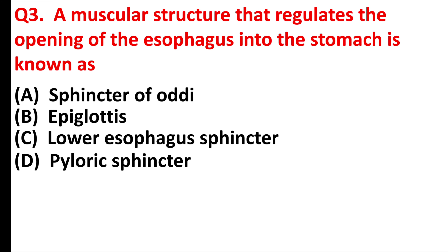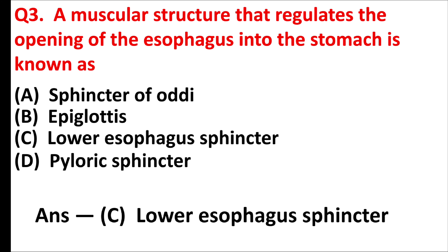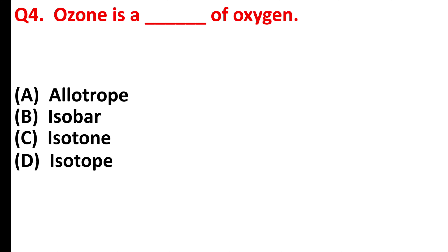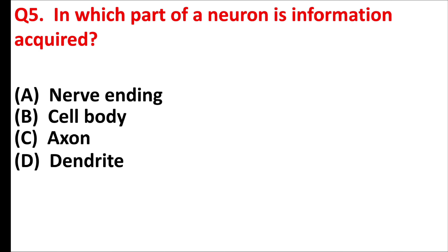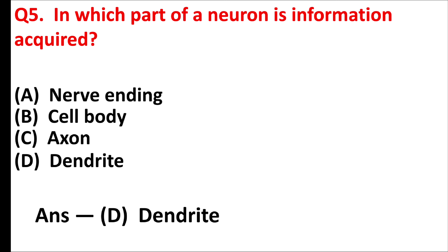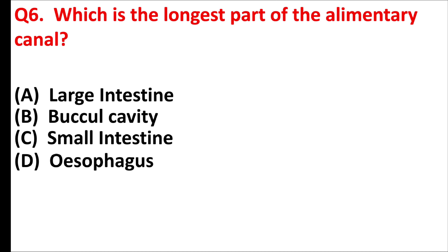The muscular structure that regulates the opening of the esophagus into the stomach is known as — answer is option C: lower esophageal sphincter. Ozone is a blank of oxygen — answer is option A: allotrope. In which part of a neuron is information acquired? Answer is option D: dendrite.